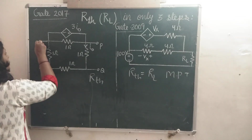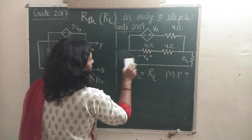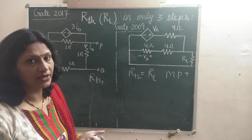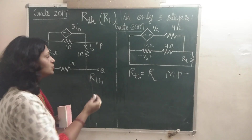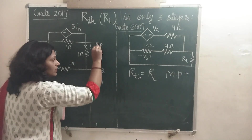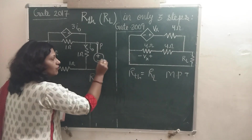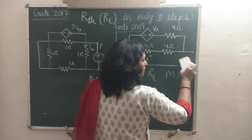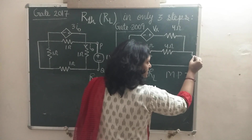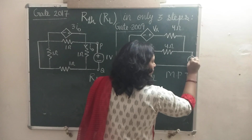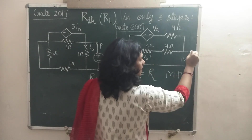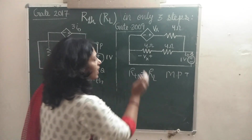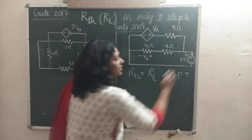For Circuit 1, I am replacing the independent voltage source by a short circuit. If there is a current source, replace it with an open circuit. Next, I apply a 1-volt test voltage at the terminal where we have to find RTH — that is, after removing RL. Because of this test voltage, a current will start flowing; let the current be I0. I also assign the direction of current in the other branches.